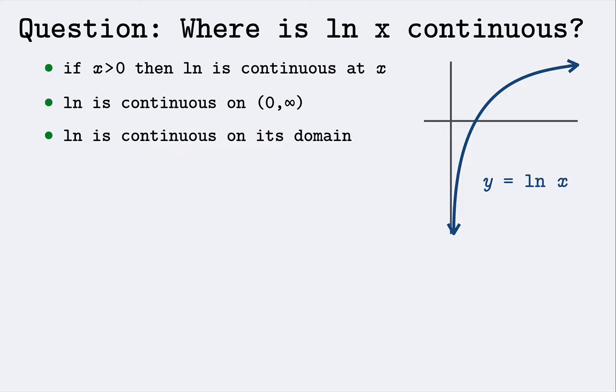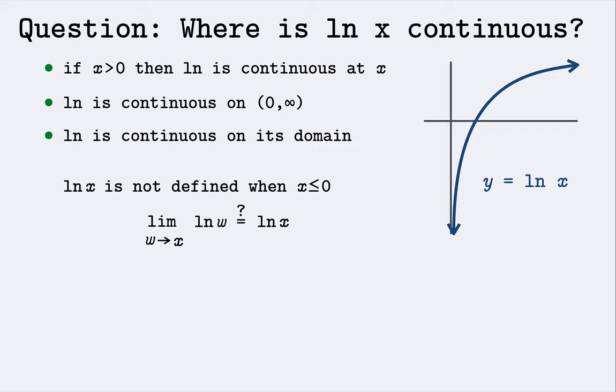Please note that ln of x is not defined when x is less than or equal to 0. When we ask the question, is ln continuous at such an argument, we would need to verify that the limit as w approaches x of ln of w is equal to ln of x. But if x is less than or equal to 0, we can't even evaluate the right-hand side of this. So certainly the function is not going to be continuous at such an argument.